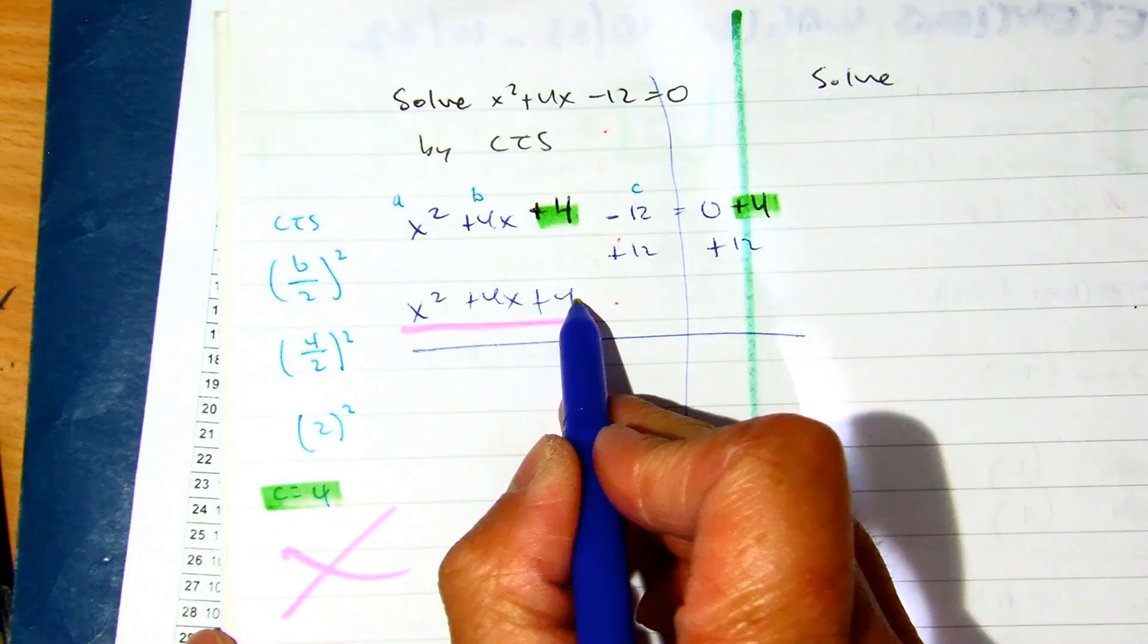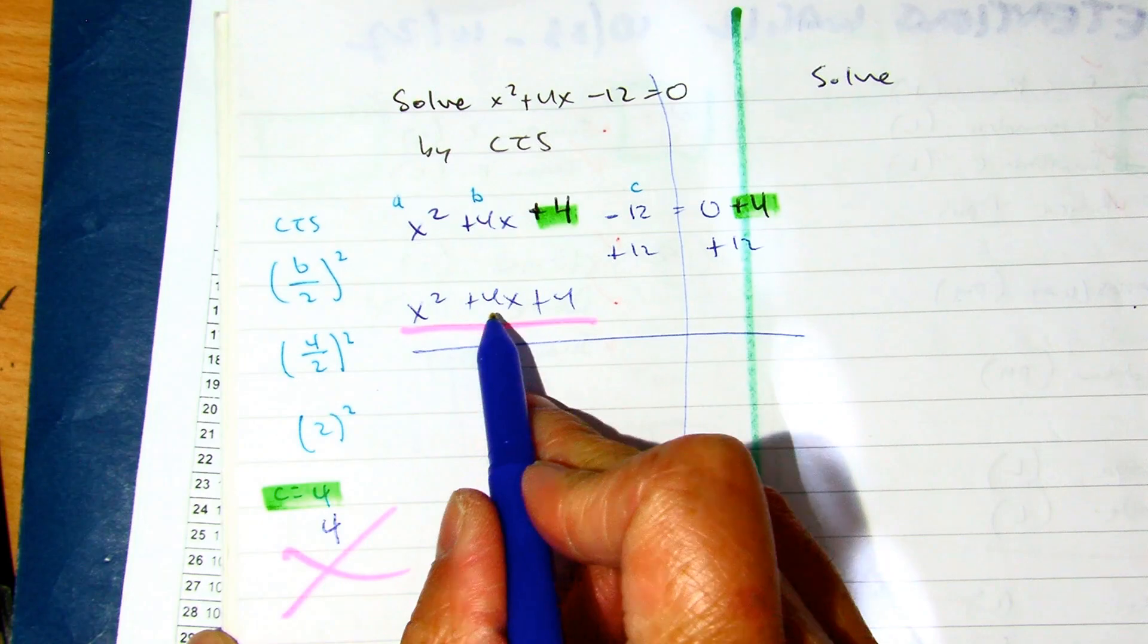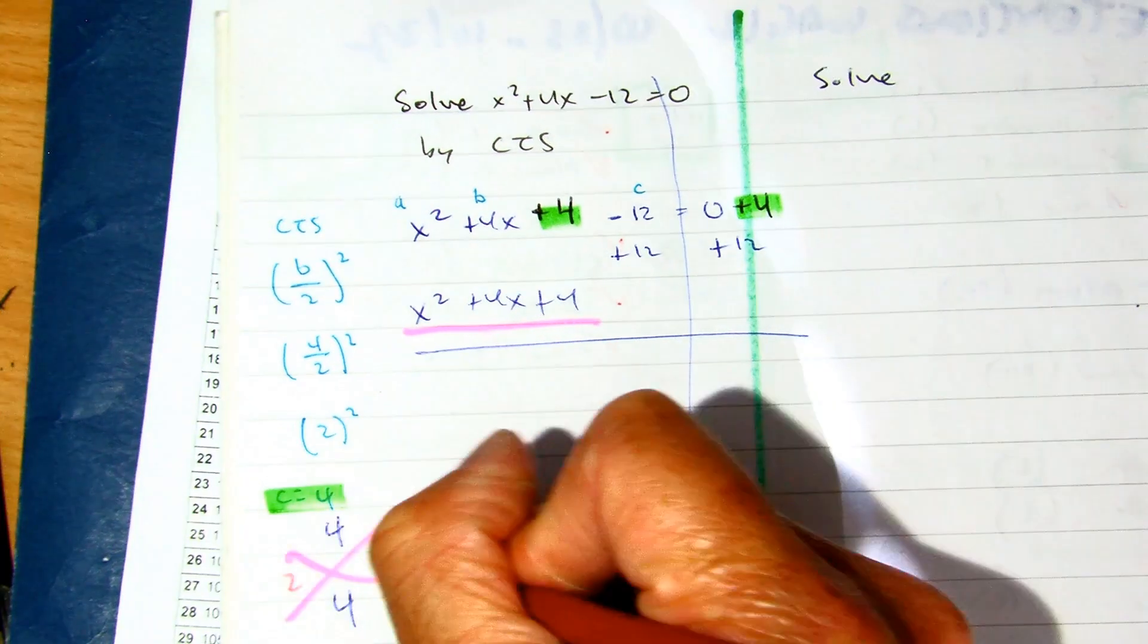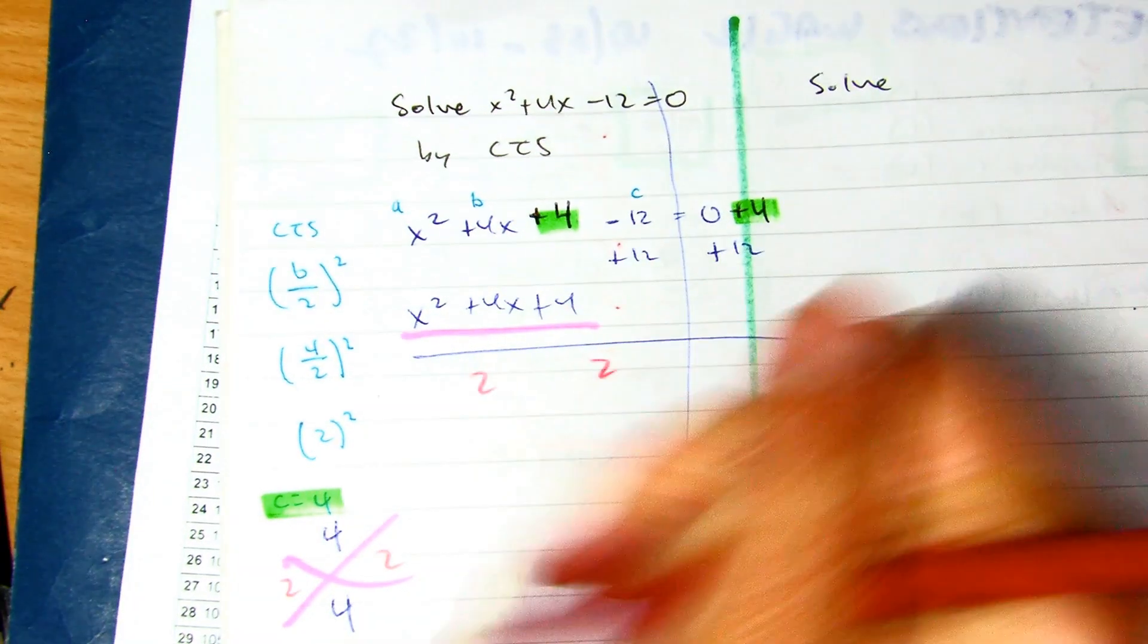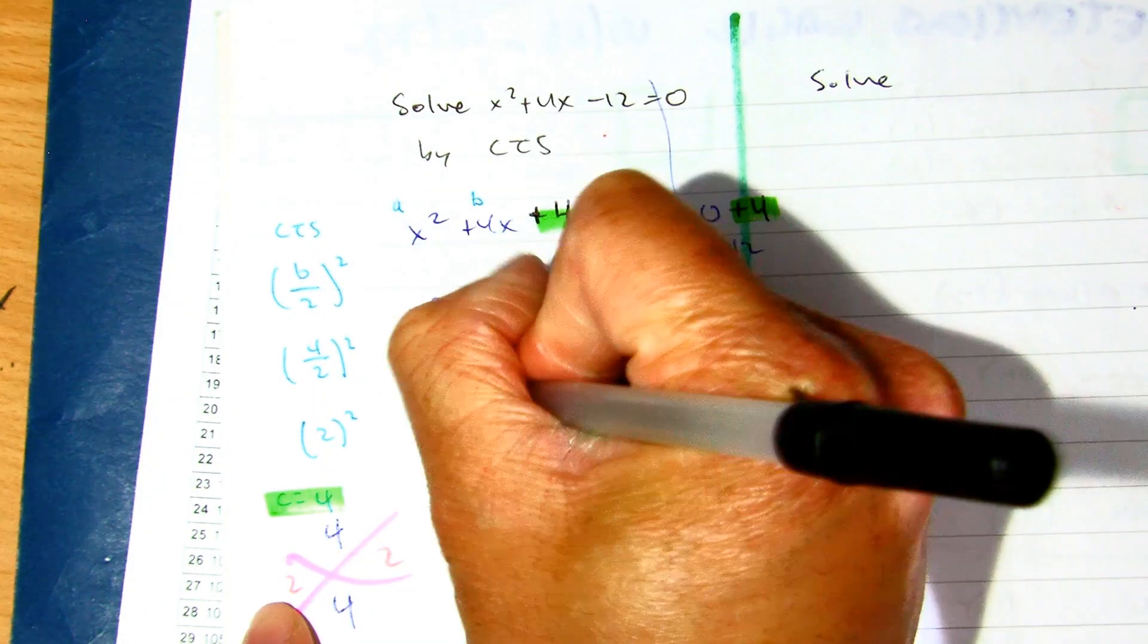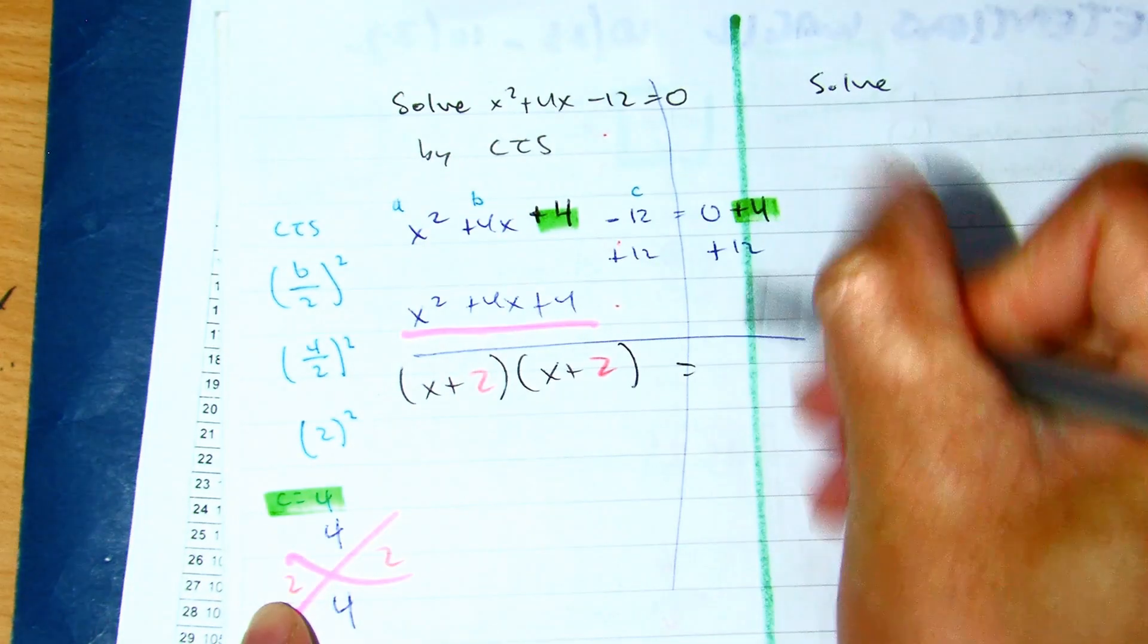So a times c is 4. Your b value is 4. Class, what are the two numbers? 2 and 2, it's the same number. We've been working on that.